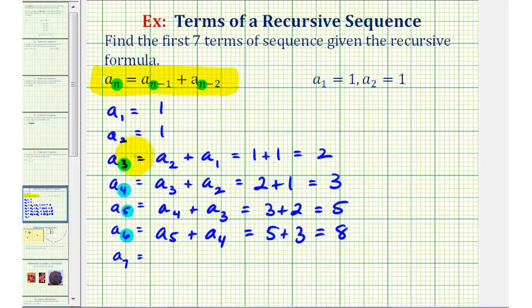Finally, for the seventh term, n equals seven. So we would have a sub six plus a sub five, again the two previous terms before the seventh term. We'd have eight plus five, which equals thirteen.